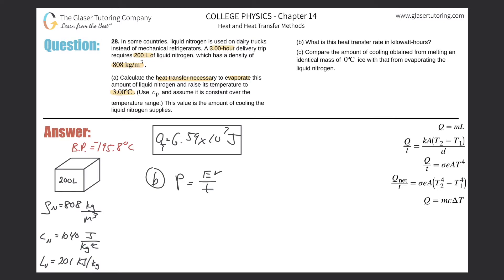We have about 6.59 × 10⁷ joules of energy supplied over three hours. We know the energy and the time, so we can calculate the power. Dividing 6.59 × 10⁷ joules by 3 hours — converting hours to seconds by multiplying by 3600 — gives approximately 6101 joules per second, or 6101 watts.